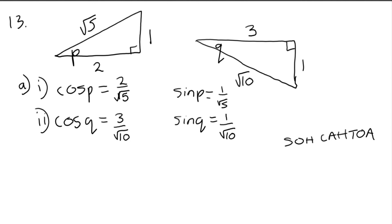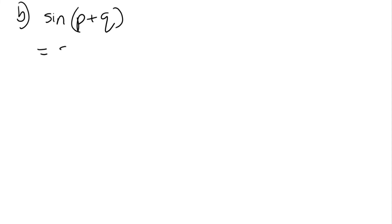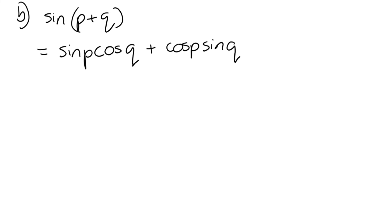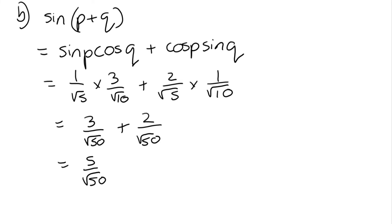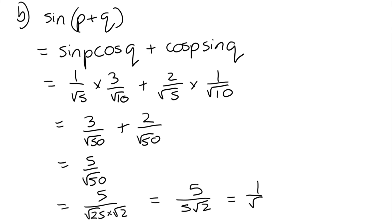For part 13b: sin(p plus q). From the formula sheet, sin(p plus q) equals sin p cos q plus cos p sin q. Substituting: 1 over root 5 times 3 over root 10 plus 2 over root 5 times 1 over root 10 gives 3 over root 50 plus 2 over root 50, which is 5 over root 50. This simplifies to 5 over root 25 times root 2, which is 5 over 5 root 2. The 5s cancel giving 1 over root 2. You could rationalise to get root 2 over 2.